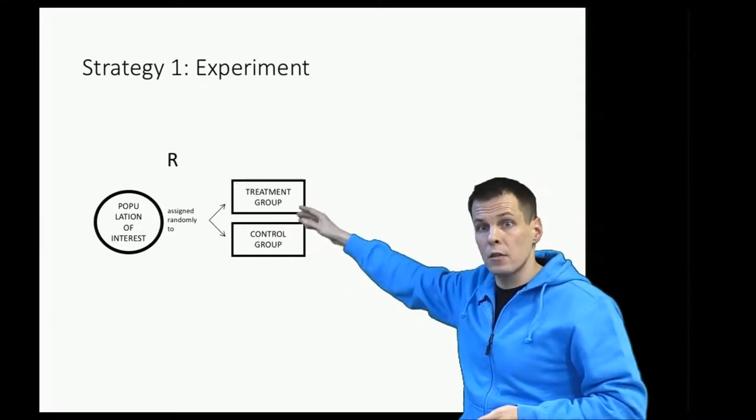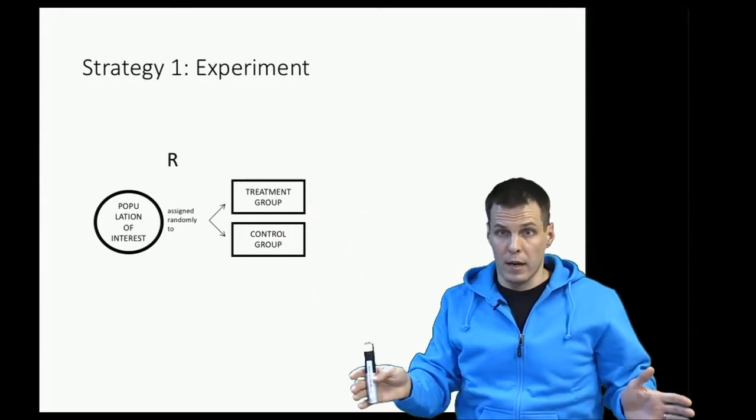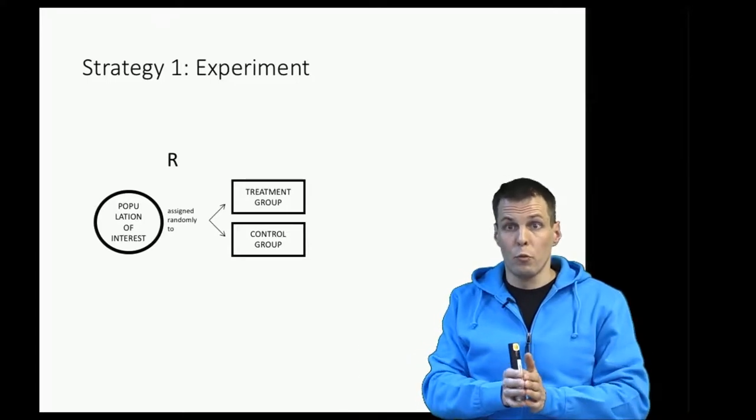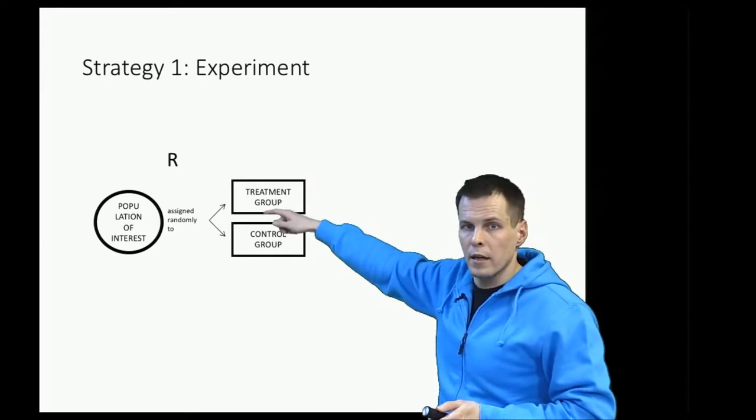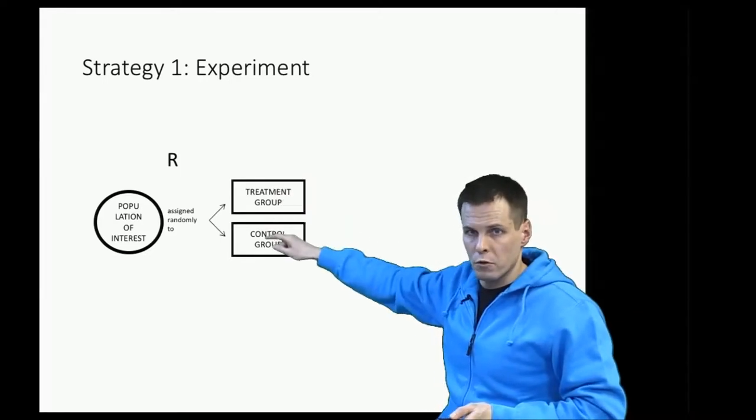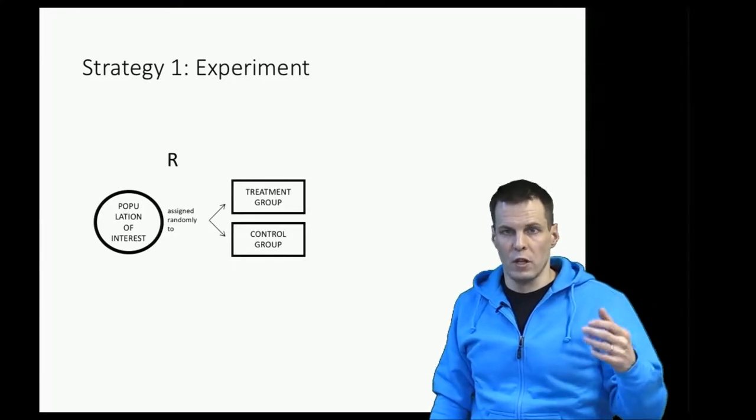This relates back to our example of dividing the men and women at companies into two groups randomly to see if there's a difference. So we divide these into two groups with treatment and control, then we apply some kind of treatment to the treatment group.